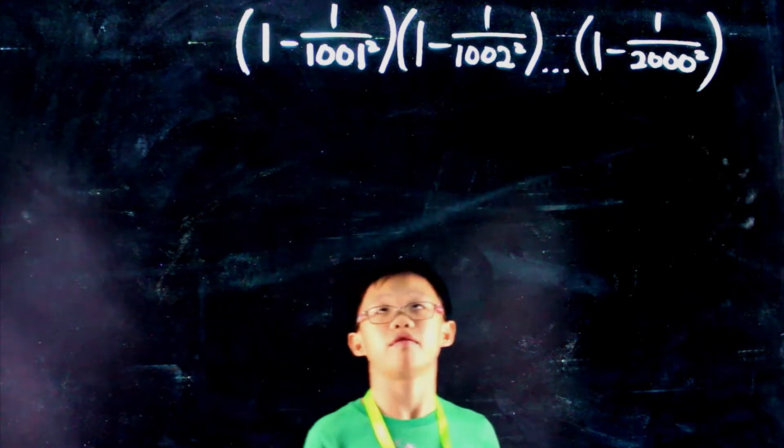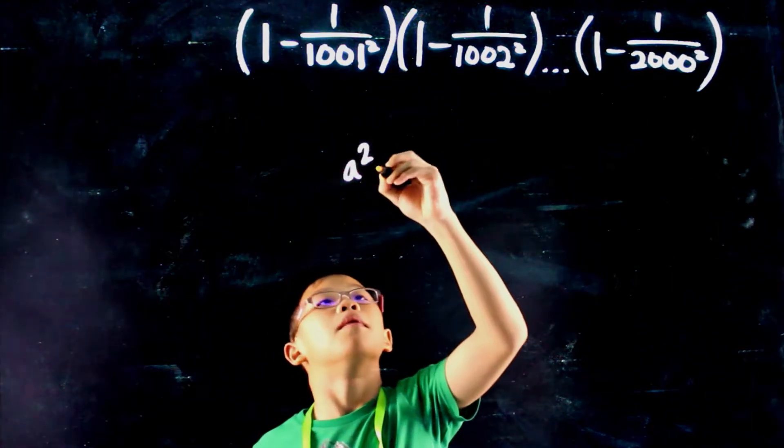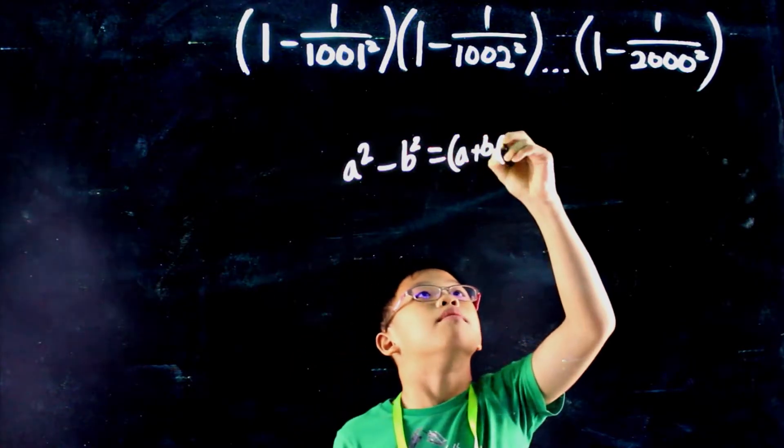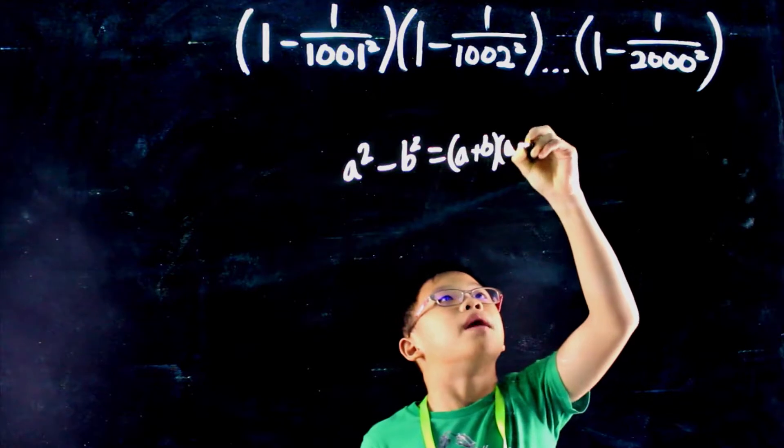First we need to follow the difference of squares formula. a squared minus b squared equals a plus b times a minus b.